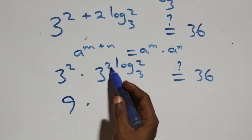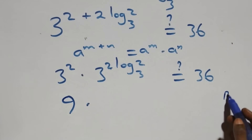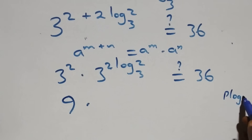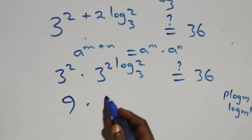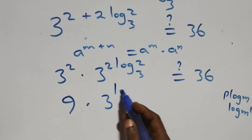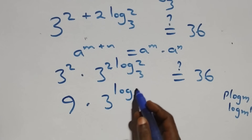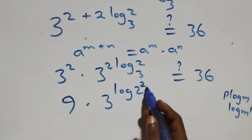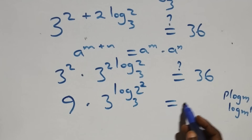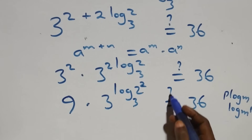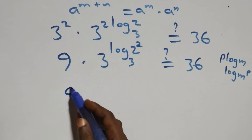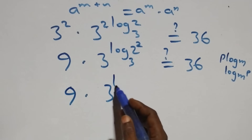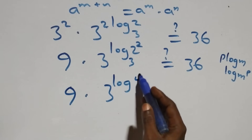We reverse the power log rule: p log n is the same as log n raised to the power p. That is, we have 3 raised to the power log(2 squared) base 3, which is 3 raised to the power log 4 base 3. So we have 9 times 3 raised to the power log 4 base 3. Is it equal to 36?